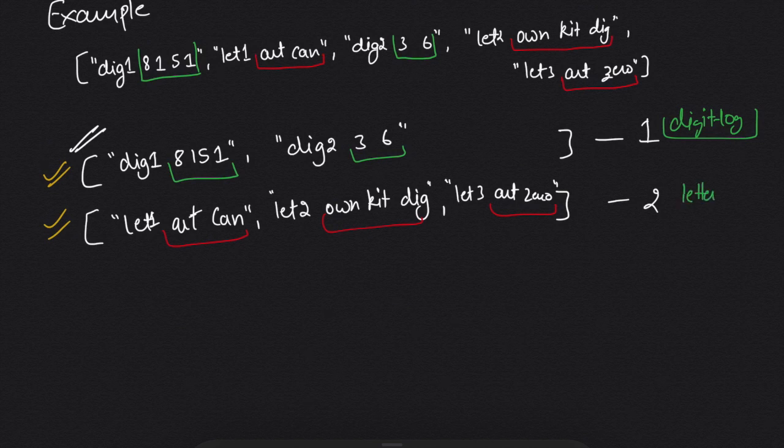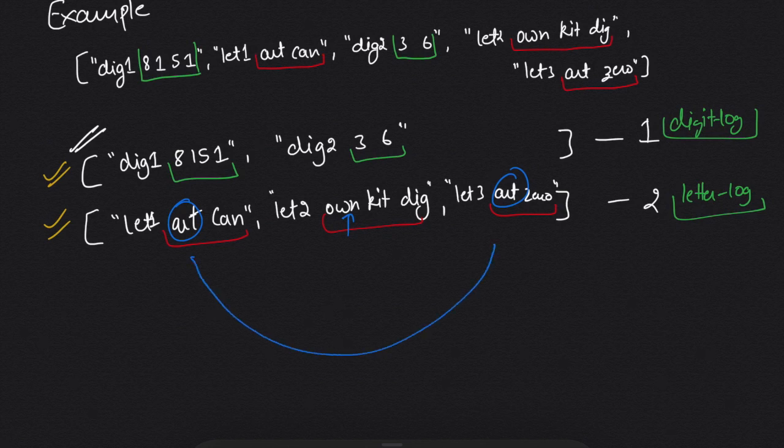But in the case of letter-log we need to return the letter-log in the lexicographical order. So if we see it very clearly, 'art' come before 'own' but there is a tie between 'art'.